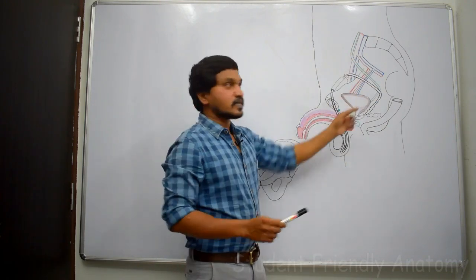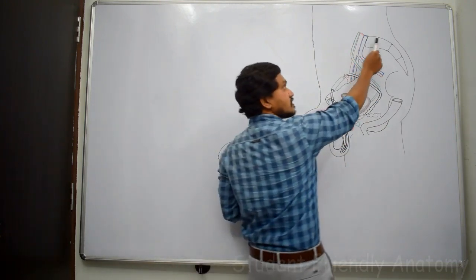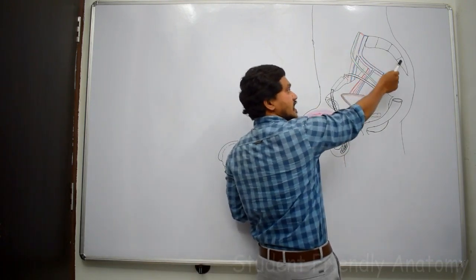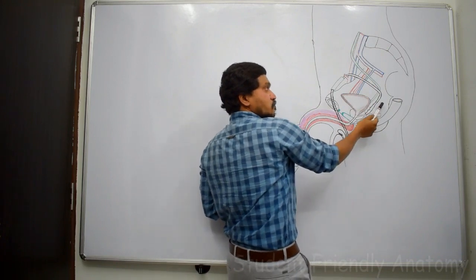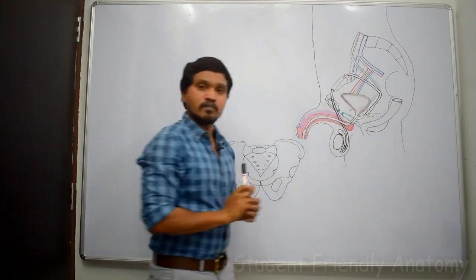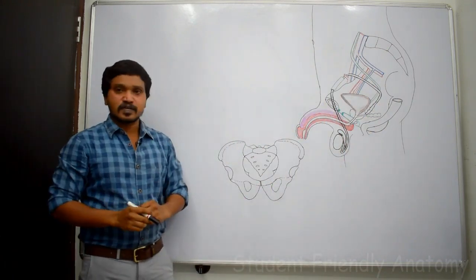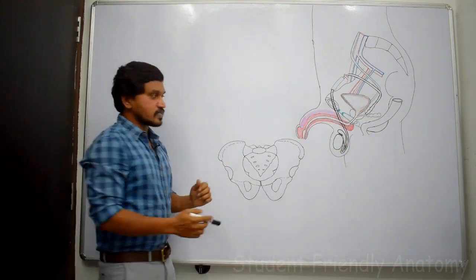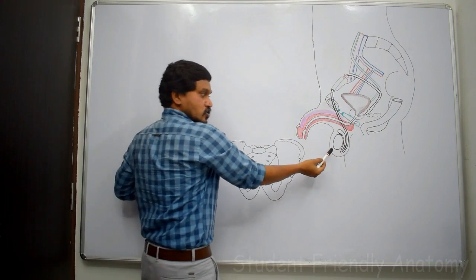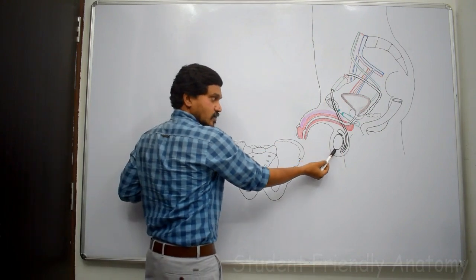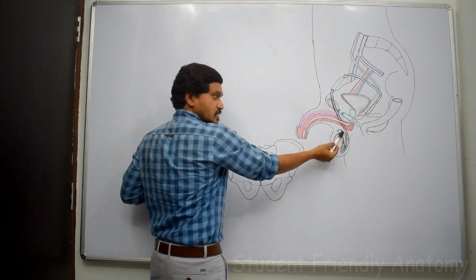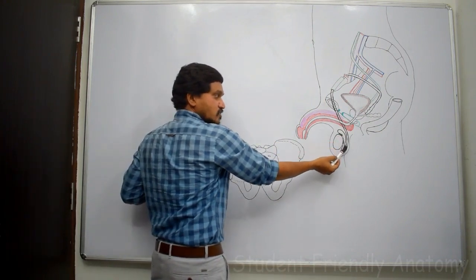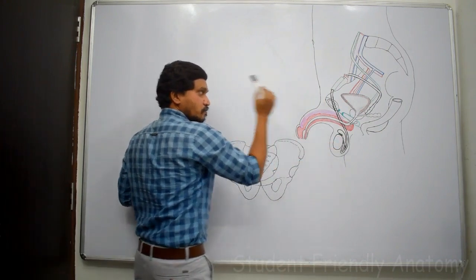This is the ureter. This is sacrum and this is hip bone. In this session, we are going to discuss scrotal sac, testis, epididymis, vas deferens, and penis.